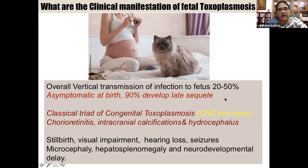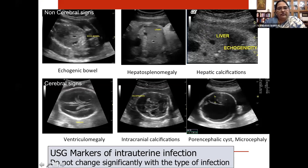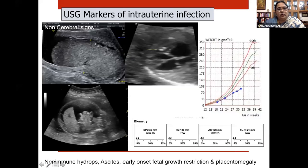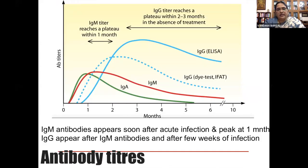The fetus has a high chance of vertical transmission — as much as 20 to 50 percent — and may be asymptomatic at birth but develop late sequelae. The classical triad of congenital toxoplasmosis affects the brain and eyes: chorioretinitis, intracranial calcification, and hydrocephalus. IUGR may also be a marker of fetal infection and should not be overlooked.